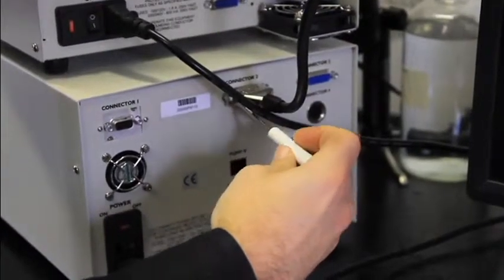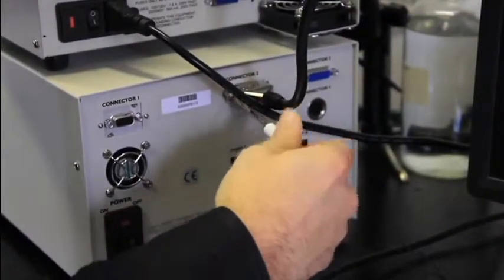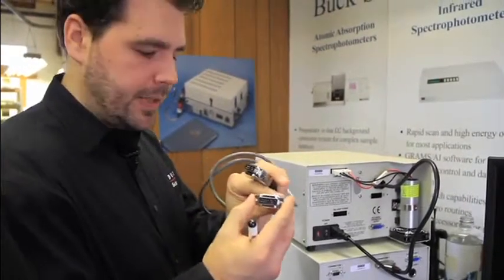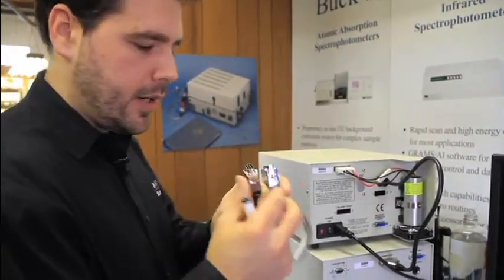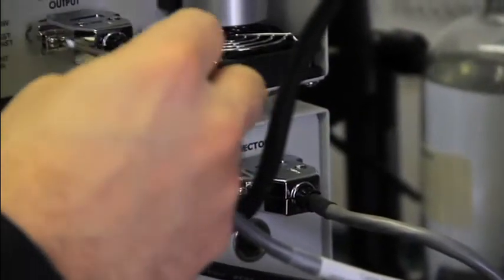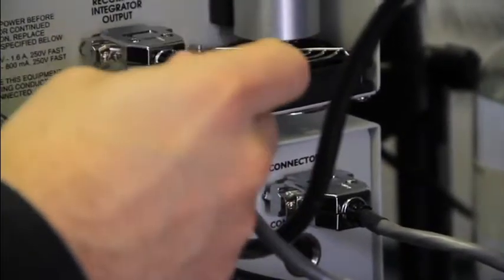The next cable that should be plugged in is the double-headed cable. It has room for 15 pins but there's only about 10 of them in there. One goes in the recorder integrator output and one goes in connector 3 on the pump chassis. Again, these should be screwed in to secure them for connection.